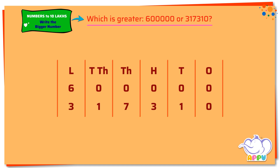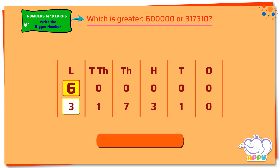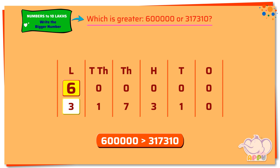To find the greater number, we first compare the digits in the lakhs place. Here we compare six and three. Since six is greater than three, six lakh is greater than three lakh seventeen thousand three hundred ten.